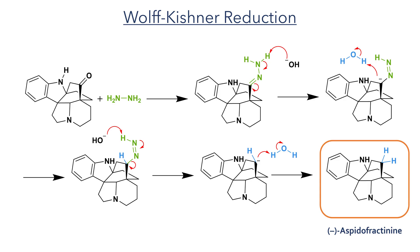The final step of the aspedofractanine synthesis is the removal of the ketone group. A Wolff-Kishner reduction was used to complete this transformation. Hydrazine reacts with the carbonyl group to form a hydrazone, which is then deprotonated with potassium hydroxide. The carbon is then protonated and the dinitrogen group is deprotonated again to trigger the elimination of nitrogen gas, after which the molecule is again protonated. This completes the reduction of the ketone and also the synthesis of aspedofractanine.